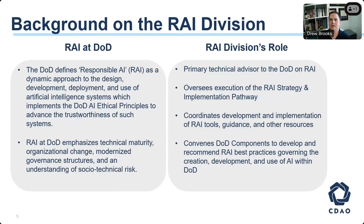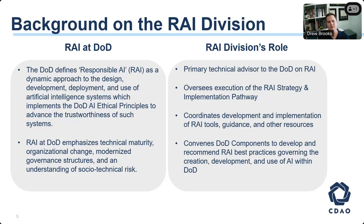The CDAO is committed to increasing the speed of adoption of AI technology throughout the department. Our division serves as the primary technical advisor to the department on responsible AI. We have three basic responsibilities: providing technical advice on what responsible AI means and how to approach it; developing tools and capabilities — including guidelines and technical resources — that enable responsible AI adoption; and developing a community of practitioners throughout the department who understand what responsible AI means and how to pursue it within their organizations.